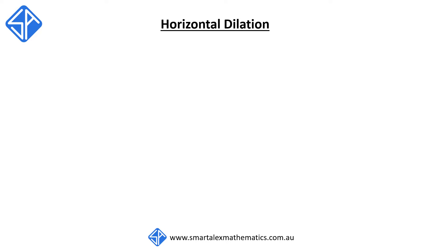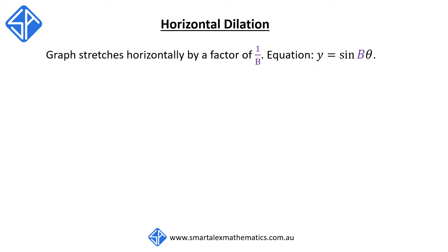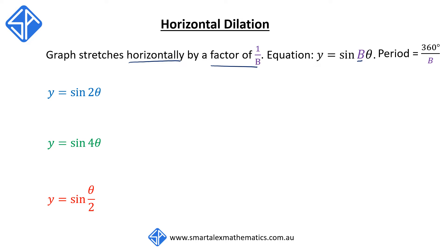The second transformation is horizontal dilation. In horizontal dilation, the graph stretches horizontally by a factor of 1 over b, and the equation will be of the form y equals sine b theta. The graph y equals sine theta has a period of 360 degrees, meaning it takes 360 degrees to complete one full revolution before repeating. With this transformation, the period becomes 360 degrees divided by b.